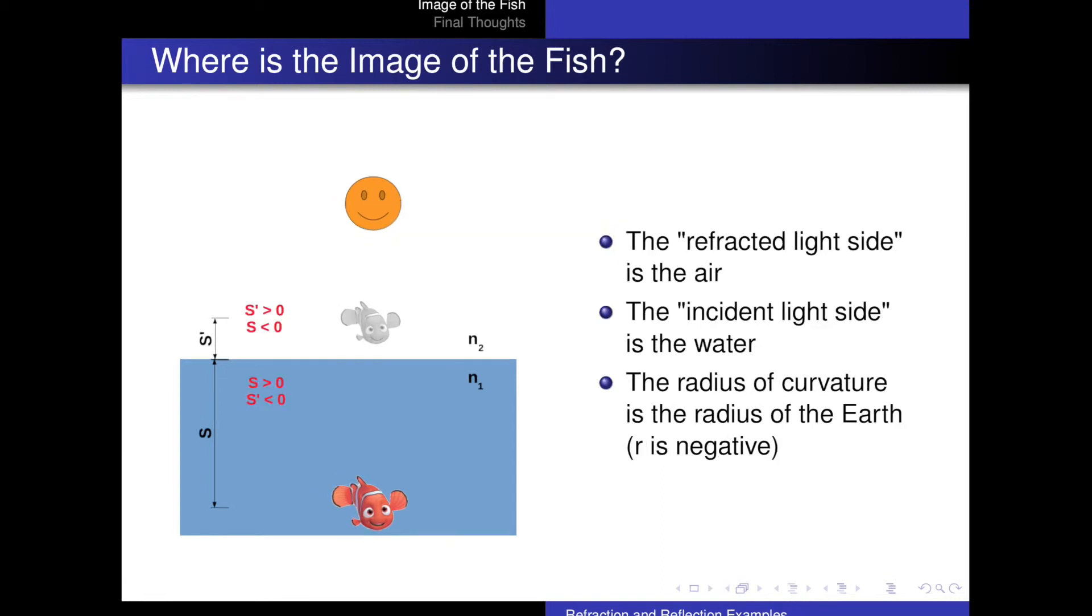So in this case specifically, the refracted light side is the air because that's where light is going to. The incident light side is the water because that's where the light is coming from. And the radius that we're actually interested in is the radius of curvature of the earth, which means r is negative.